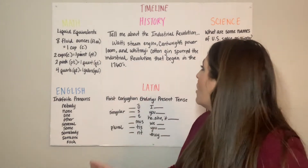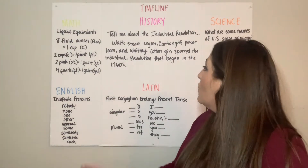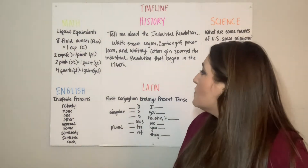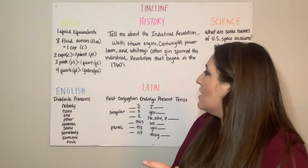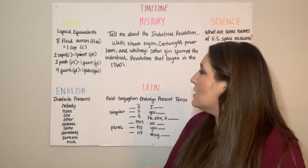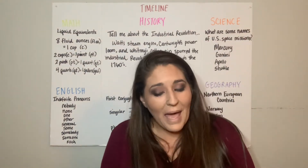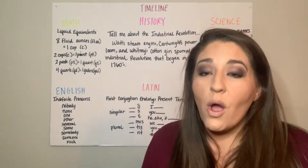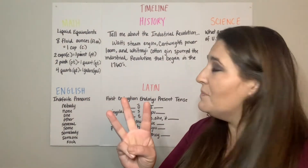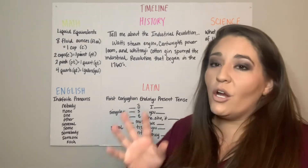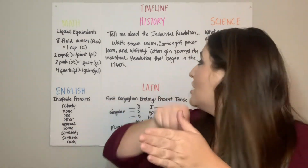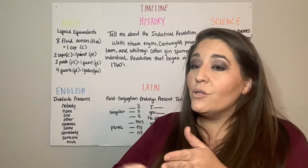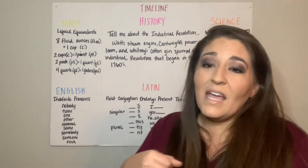The history song goes: Watt's steam engine, Cartwright's power loom, and Whitney's cotton gin spurred the industrial revolution that began in the 1760s. You can also make up hand motions if you don't like the patting and clapping — Watt's steam engine, Cartwright's power loom, Whitney's cotton gin spurred the industrial revolution that began in the 1760s.